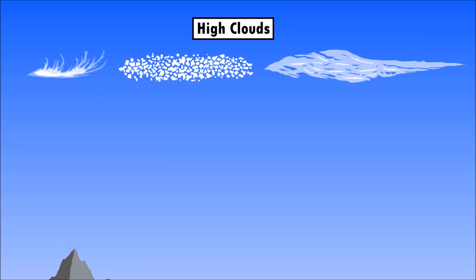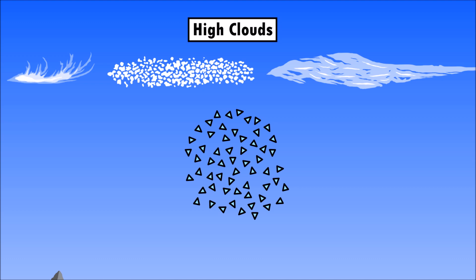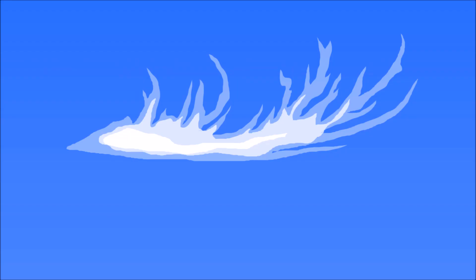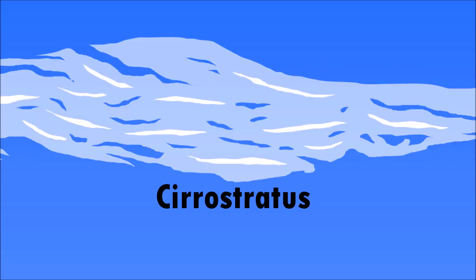Clouds that are high up in the sky are made from ice crystals because of the very cold temperatures of the atmosphere. The different high-level clouds are cirrus clouds, which are thin and wispy. Cirrocumulus clouds are small patchy clouds that are often arranged in rows. And cirrostratus clouds are thin transparent sheets across the sky.